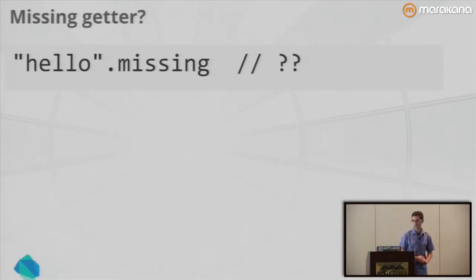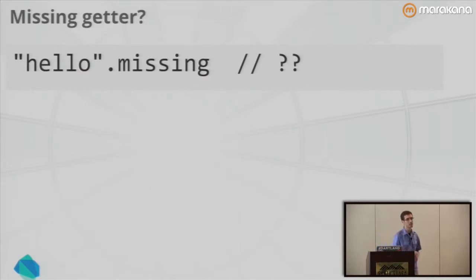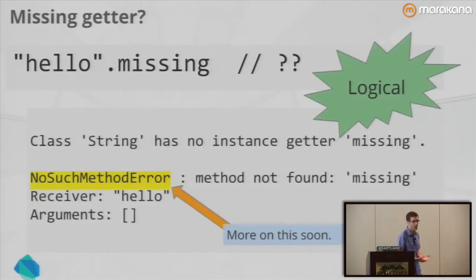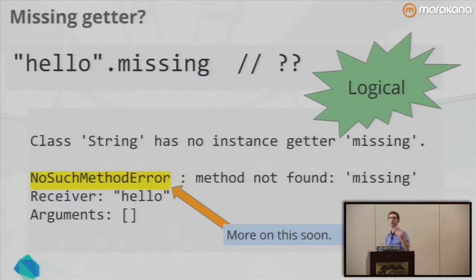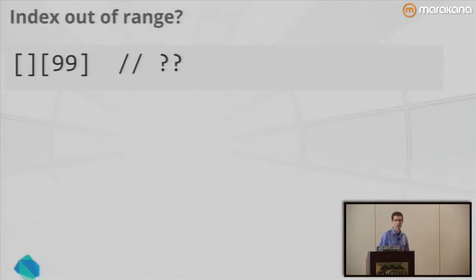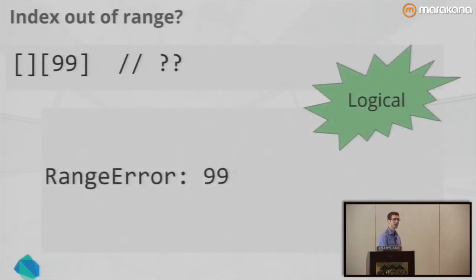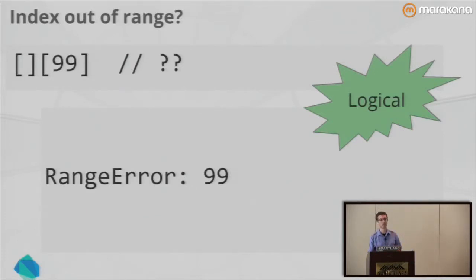Pop quiz: in Dart, if you call .missing on a string and there is no 'missing' getter on string, what would you expect? You get an exception right at runtime saying 'string has no instance method missing.' This is different from traditional web programming, which returns undefined and keeps trucking — leading you to find bugs very far away from the original cause. You want to know immediately that you called a method that doesn't exist. Similarly, accessing an array out of bounds gives you a range error right there.